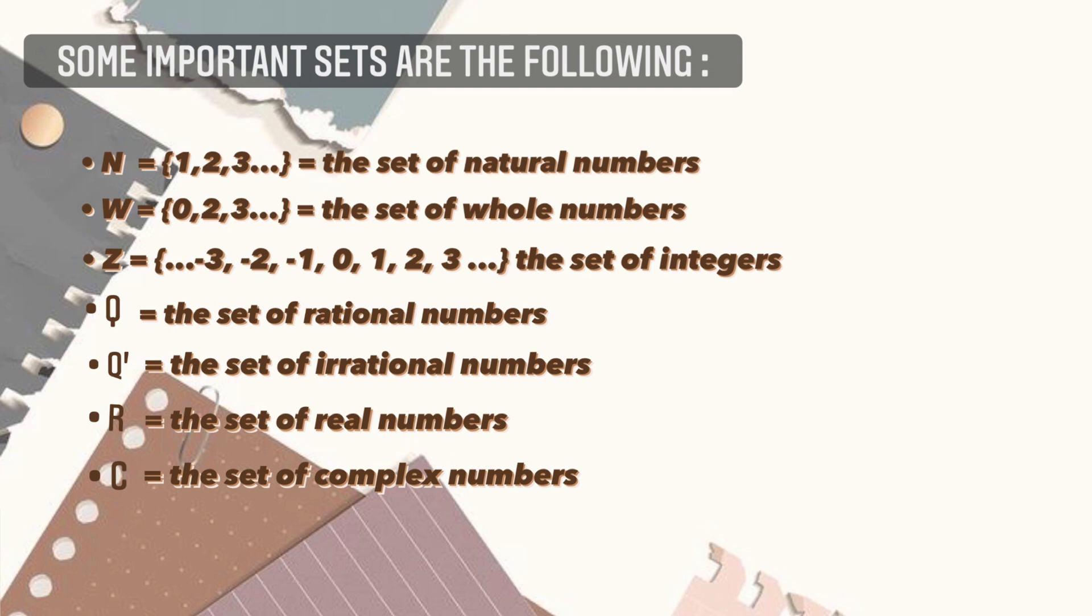Next is the letter Z, the set of integers: negative 3, negative 2, negative 1, 0, 1, 2, and 3. In integers, we have positive and negative numbers.